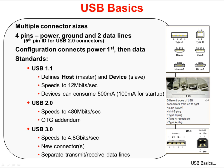USB connectors come in multiple sizes and most have four pins: power, ground, and two data lines called D-plus and D-minus. Some connectors have a fifth pin for USB 2.0 ID. In the diagram on the bottom right, note that the pins for the power are slightly longer than the data pins.